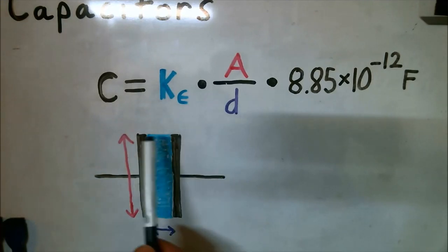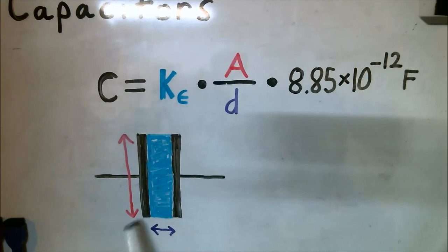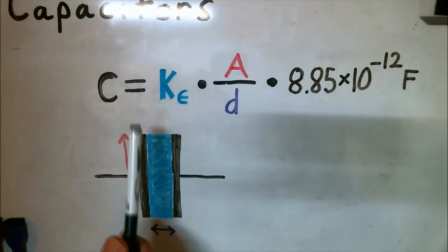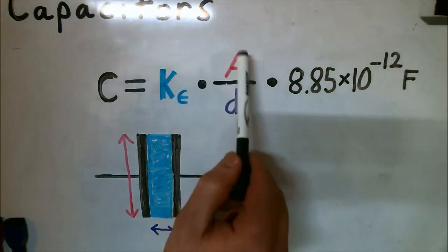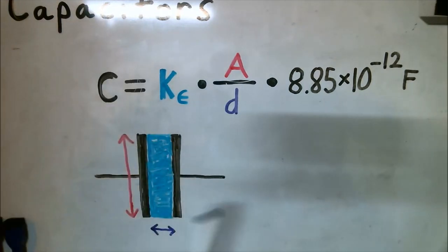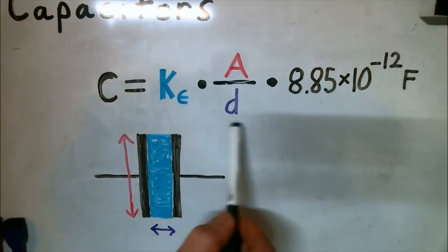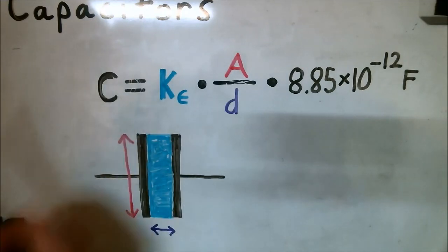So, the only two things we are going to focus on are the area and the distance. The area being the area of the plates and the distance being the distance between the plates or the dielectric thickness. So, knowing that we can see that if the area increases, the overall capacitance will increase. And if the distance between those plates increases, the overall capacitance will go down.